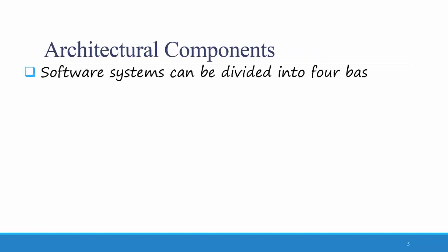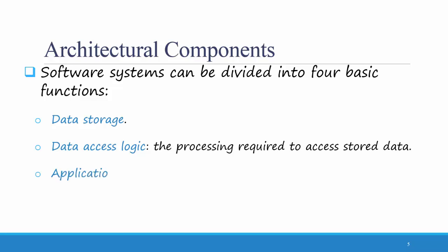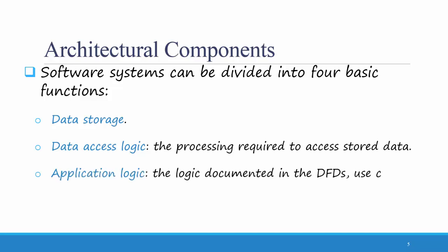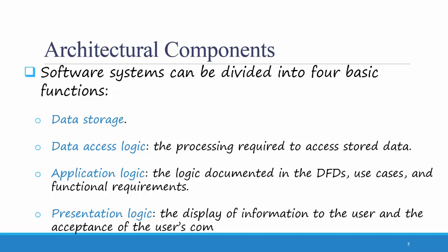Software systems can be divided into four basic functions: data storage; data access logic, the processing required to access the stored data; application logic, the logic documented in the DFDs, use cases, and functional requirements; and presentation logic, the display of information to the user and the acceptance of the user's commands.